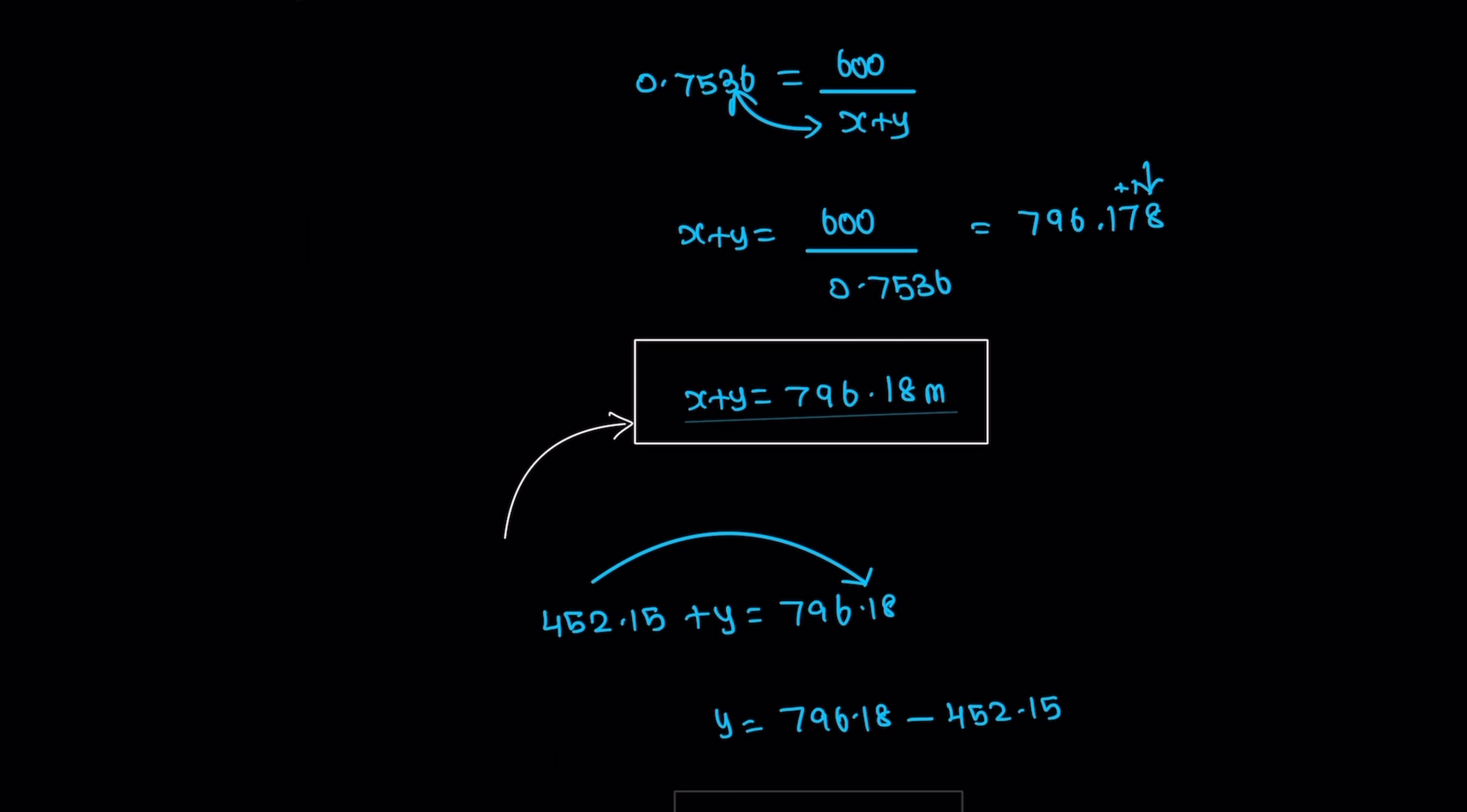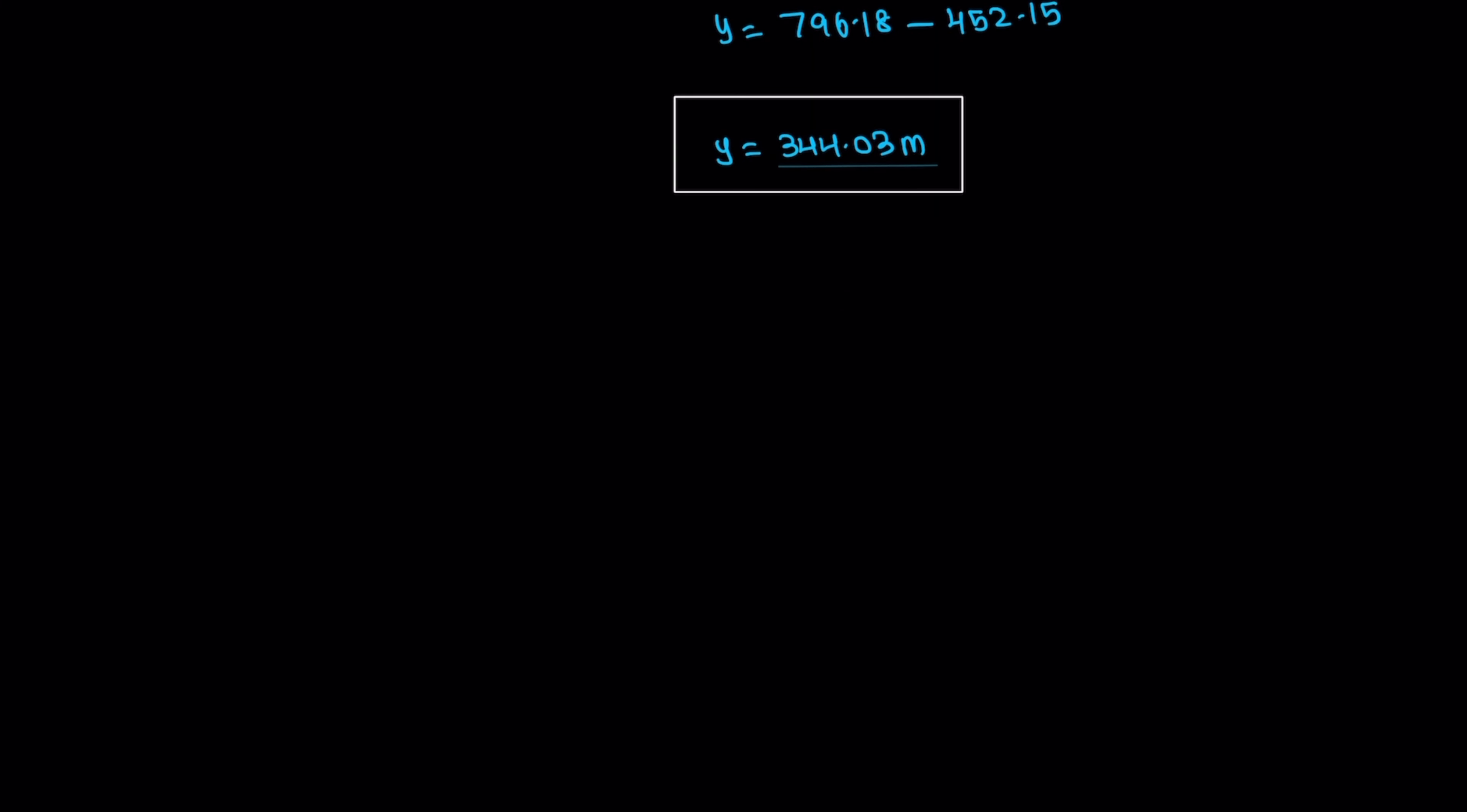Time equals distance divided by speed. Distance value is 344.03 meters, speed is 175 meters per second. Dividing gives the final answer of 1.966 seconds. Time T equals 1.97 seconds.